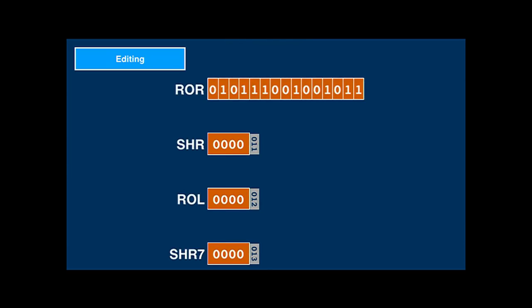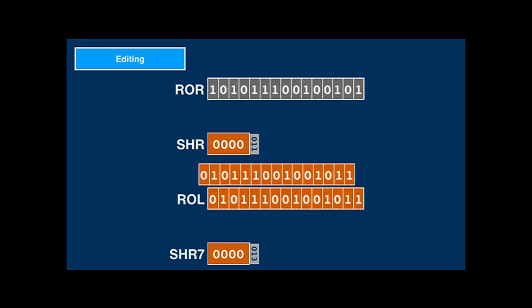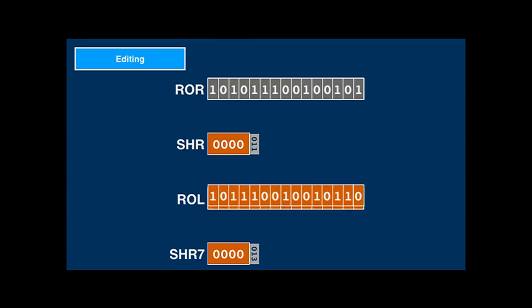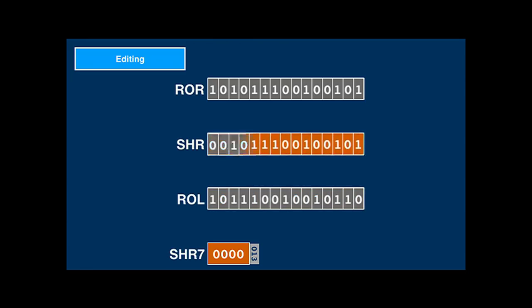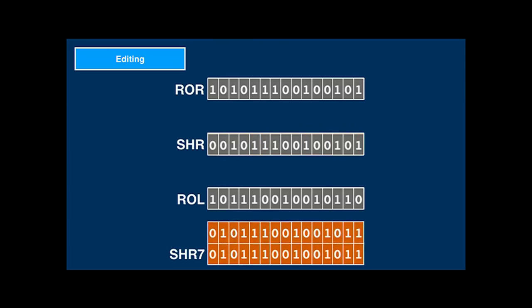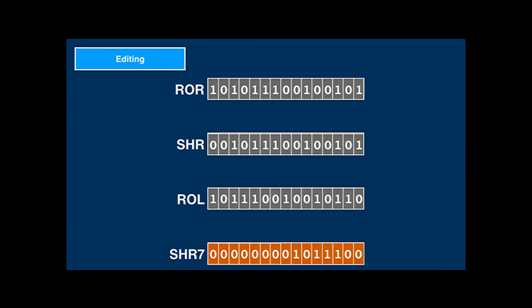When writing a 15-bit value into the ROR editing register, it will be moved to the right by one bit and the lowest bit will be cycled to the top — the result can then be read back. ROL rotates left. SHR shifts to the right, duplicating the top bit. And SHR7 shifts to the right by seven bits, filling the top with zero. This is needed for the interpreter system software component we'll learn about later.